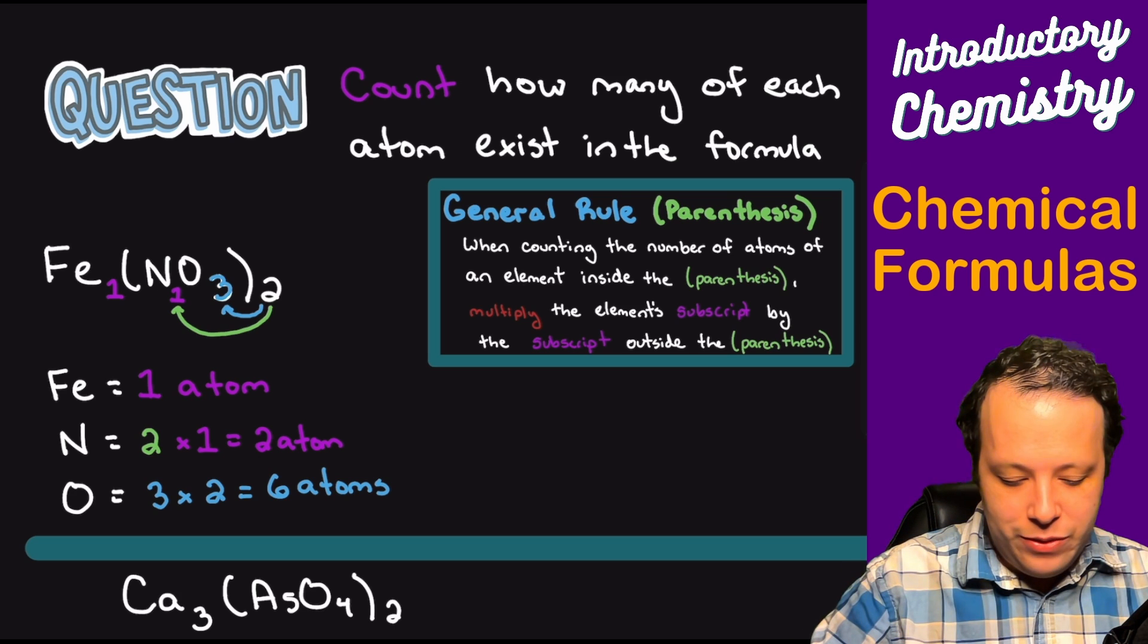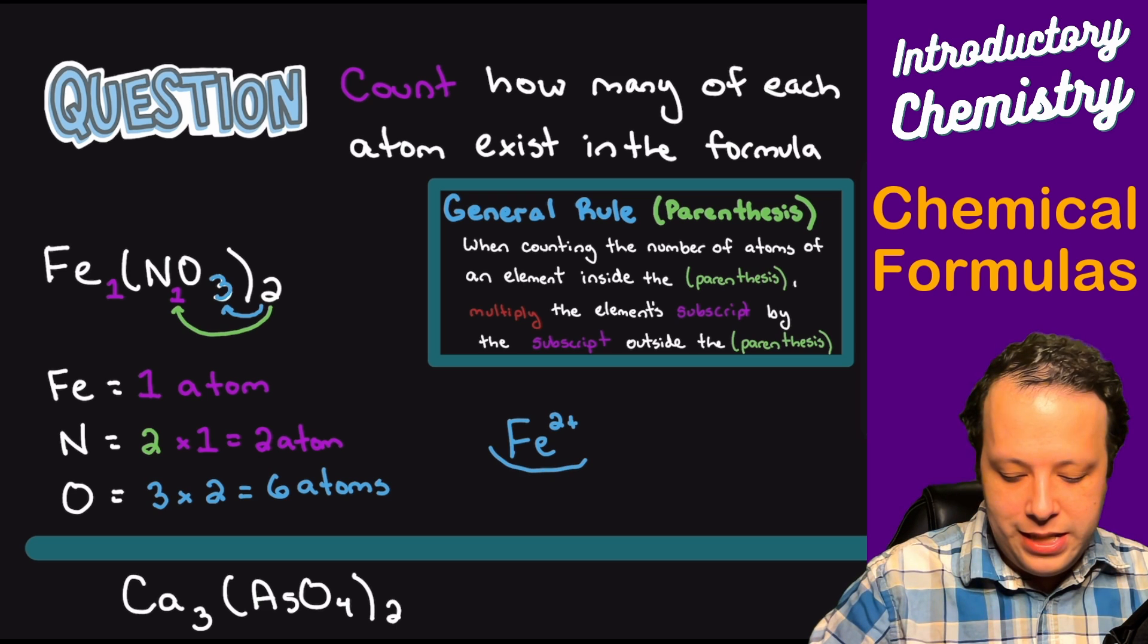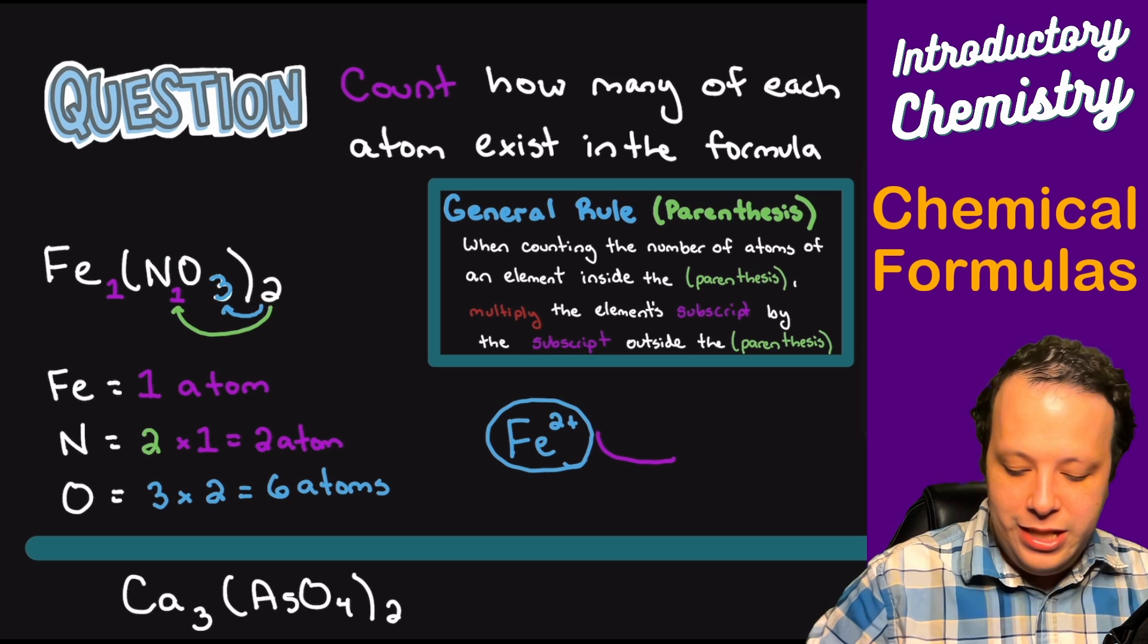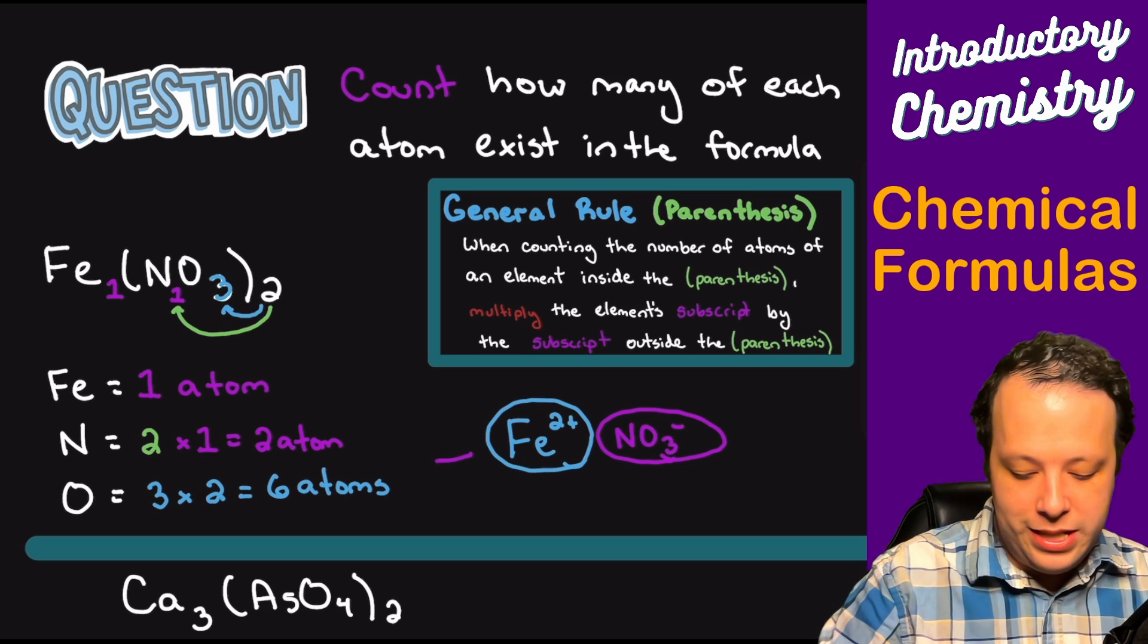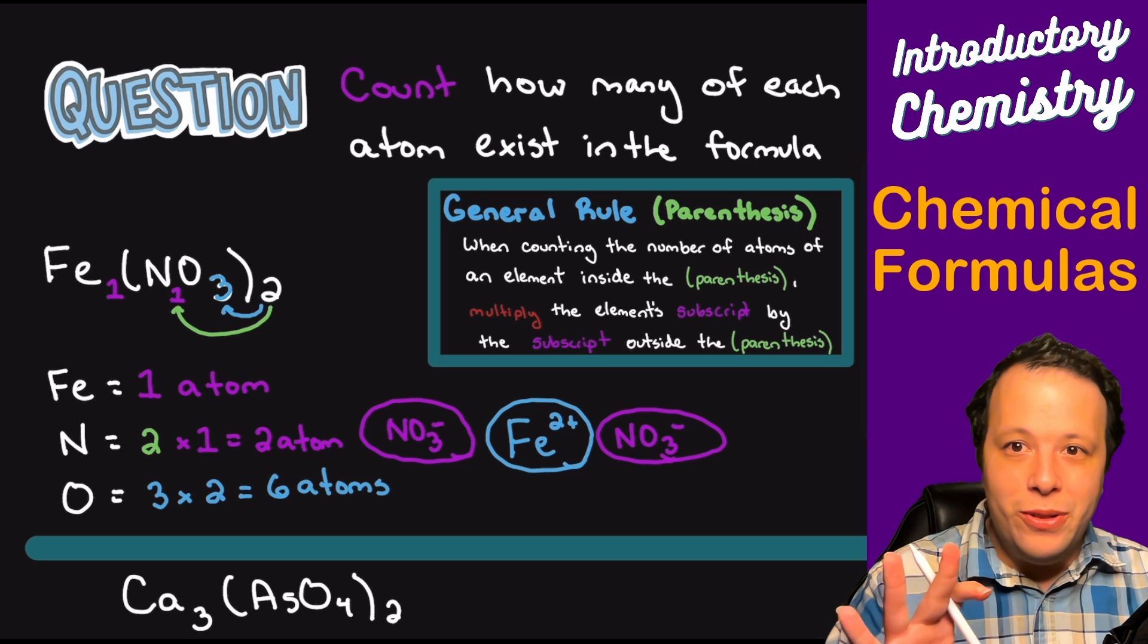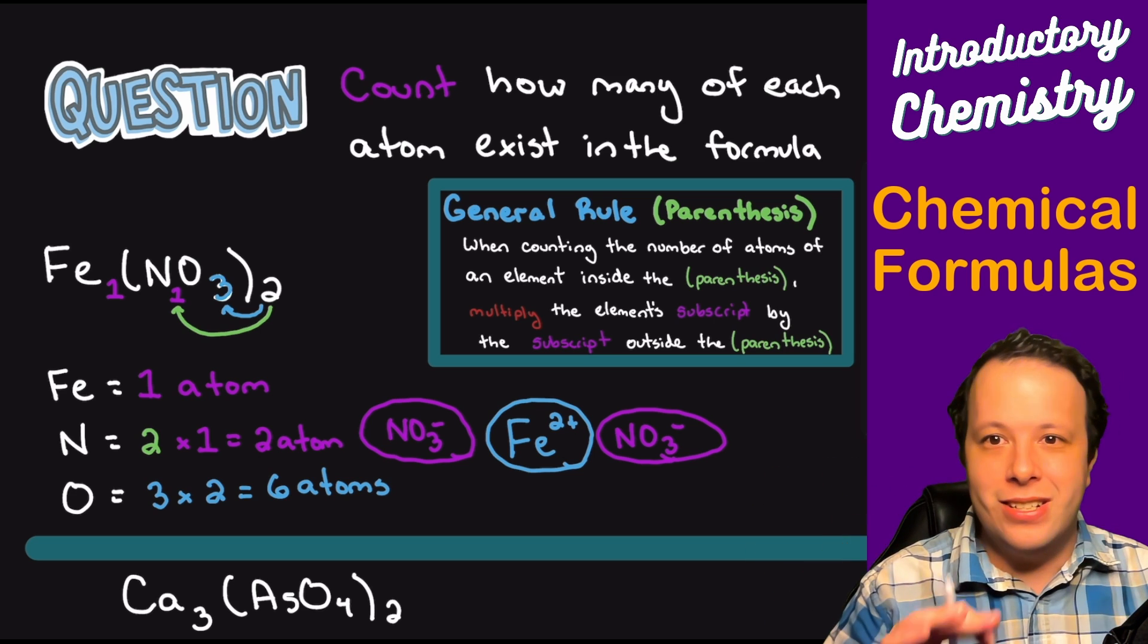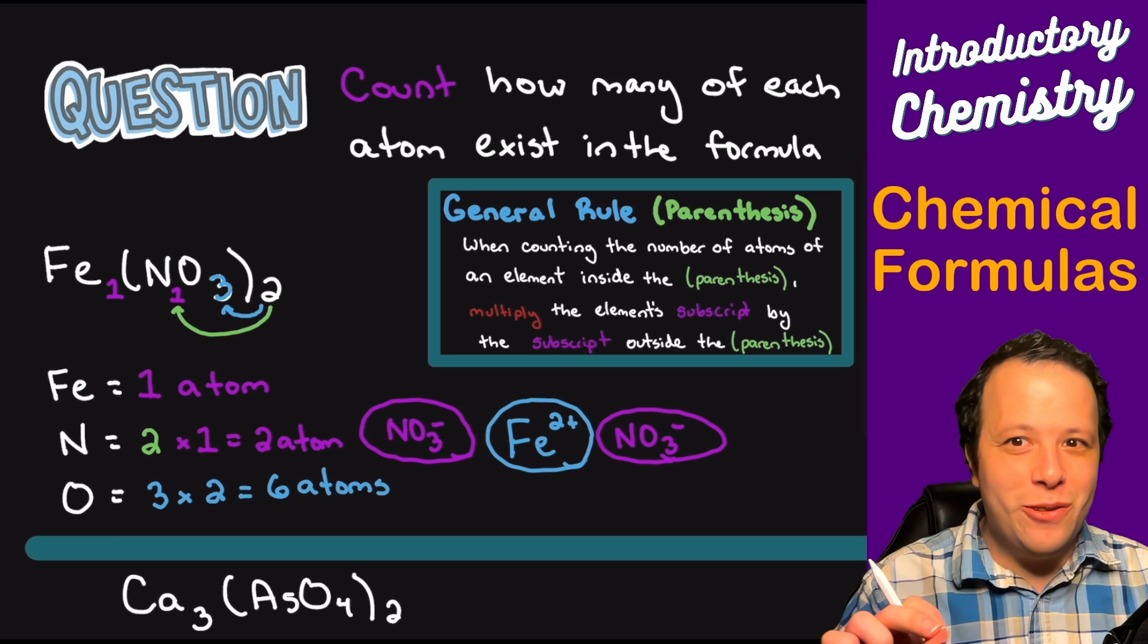Now, just to kind of illustrate what does this represent, remember ionic compounds exist in a lattice type of network. So what this is kind of letting you know is that, hey, we have this iron two plus that's here, and there are different nitrate units on each side. So it's kind of like we have, let's say, an NO3 on one side, NO3 on the other, and they are surrounding this iron, and it's in a repeating framework.